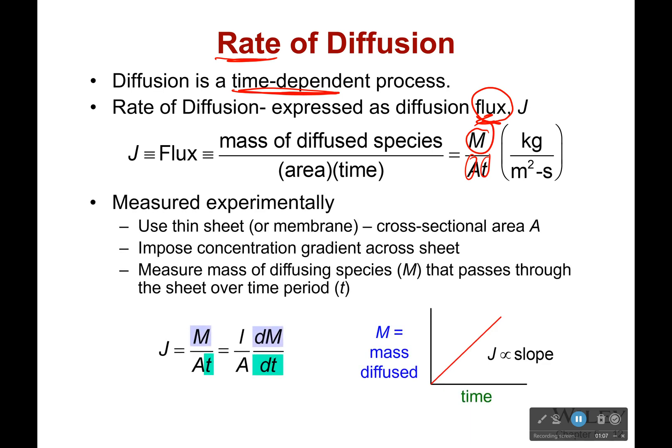Now this is honestly usually measured experimentally. We'll use some sort of thin sheet of the material, or a membrane, very thin, with a known cross-sectional area A. And we will impose a concentration gradient across the sheet. Put a very high amount of one species on one side, and low amount on the other. And we measure the mass of the diffusing species M that passes through the sheet over a time period t.